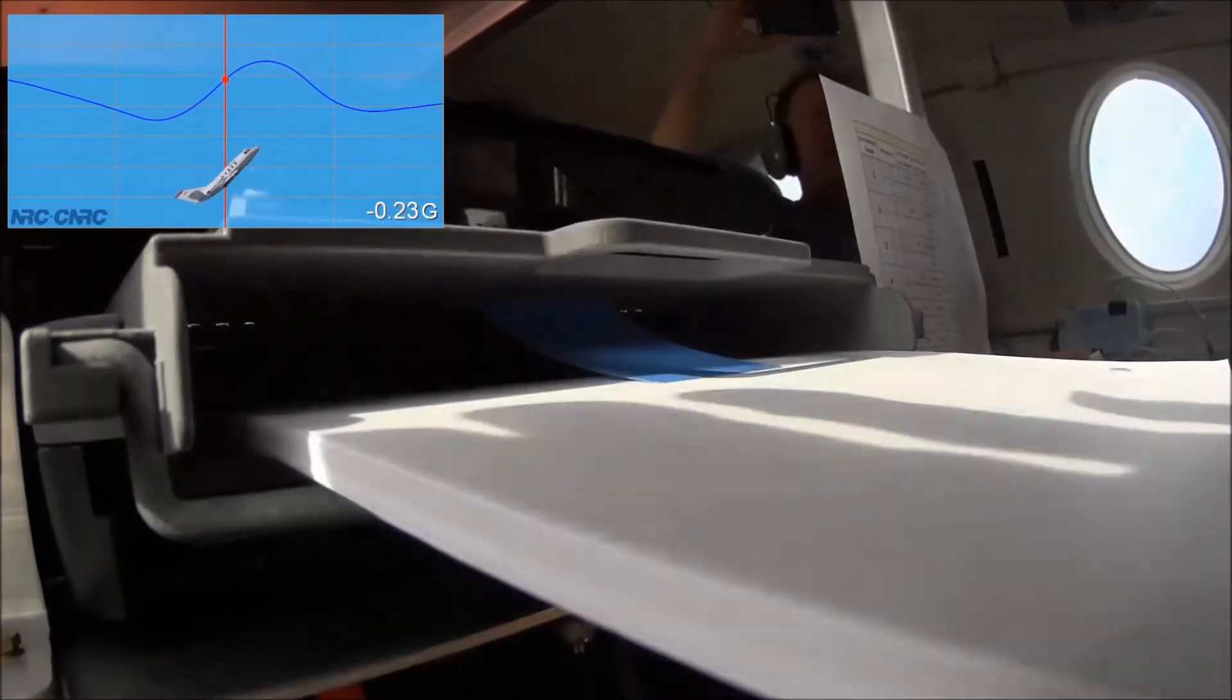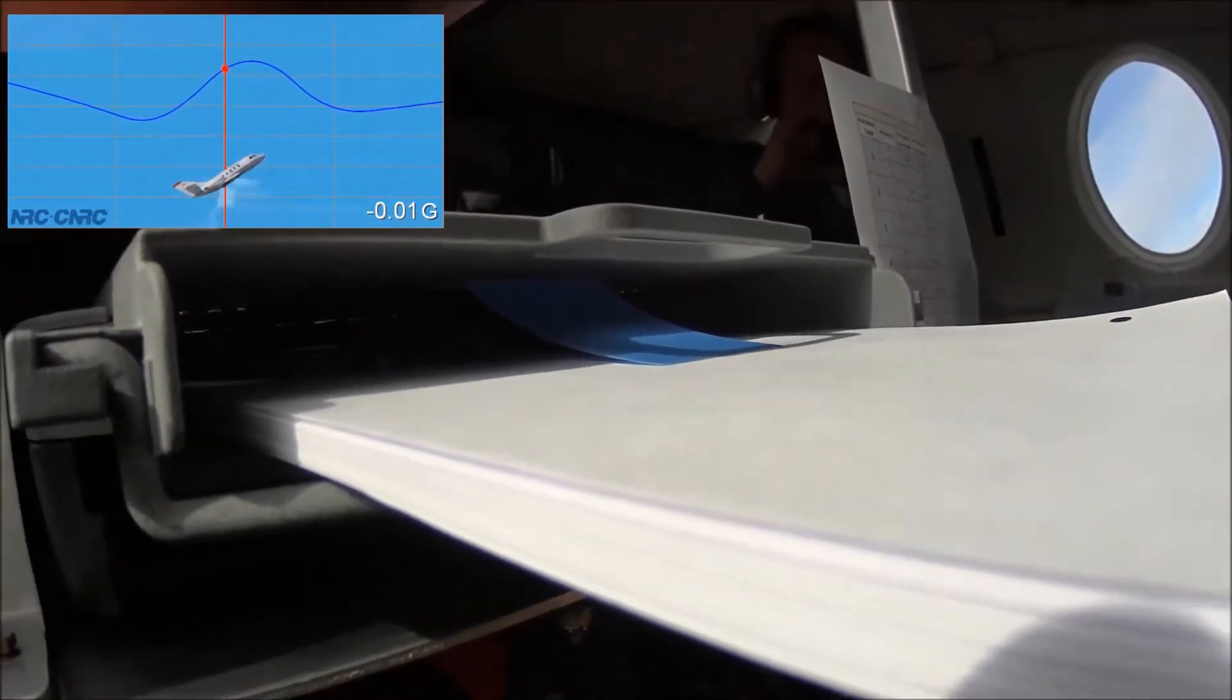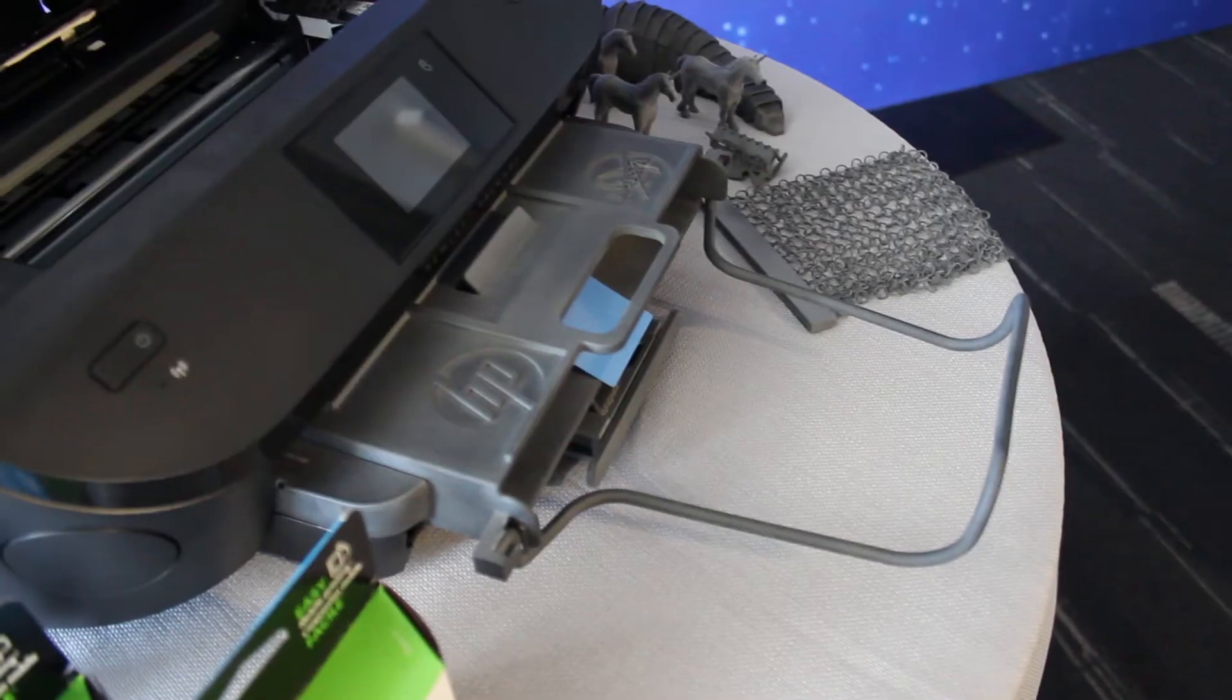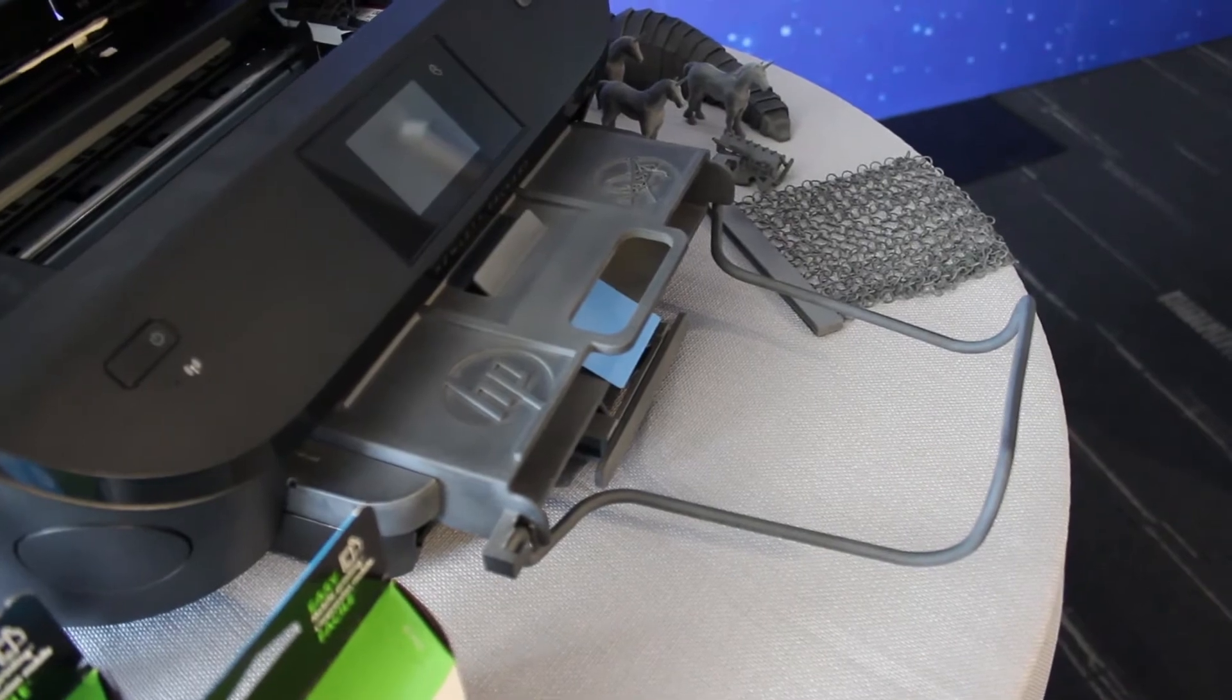And instead of just letting the printed pages fall into a tray, a special tongue holds the paper in place. And HP used a new material to craft many of the parts on this printer.